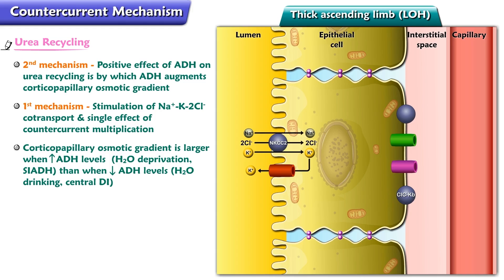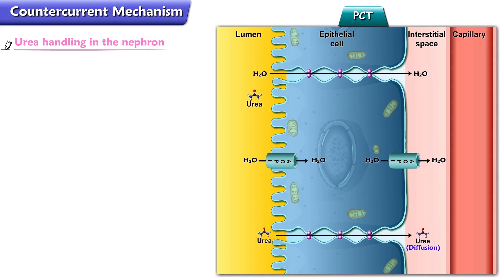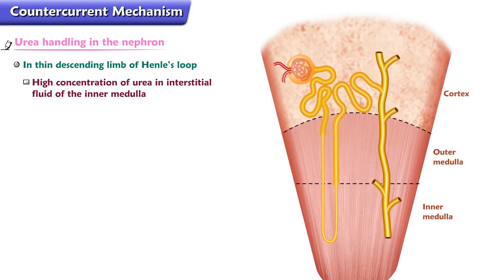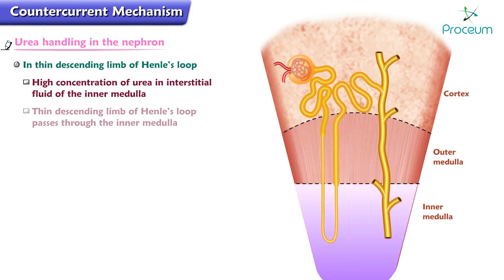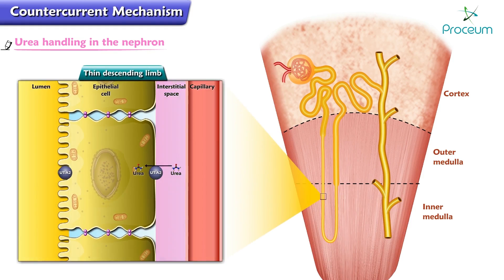Regarding urea handling in the nephron: in the proximal tubule, 50% of the filtered urea is reabsorbed by simple diffusion. As water is reabsorbed in the proximal tubule, urea lags slightly behind, causing the urea concentration in the tubular lumen to become slightly higher than in the blood. This concentration difference drives passive urea reabsorption. At the end of the proximal tubule, 50% of the filtered urea has been reabsorbed, leaving 50% in the lumen. There is a high concentration of urea in the interstitial fluid of the inner medulla, and the thin descending limb passes through it, so urea diffuses from the interstitial fluid into the lumen.